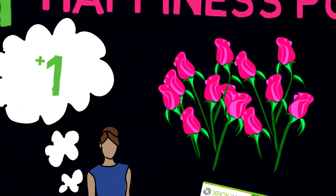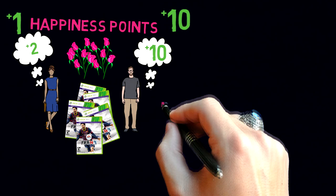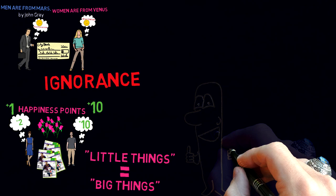Maybe if he got 50 roses, then it would be two points, but the big idea is that she assigns points very differently. Little things are assigned just as much value as big things.